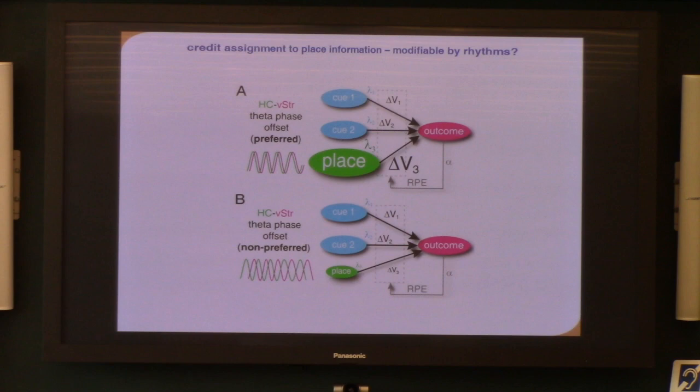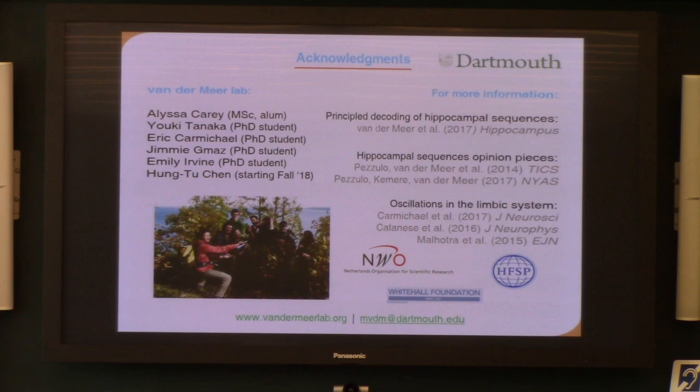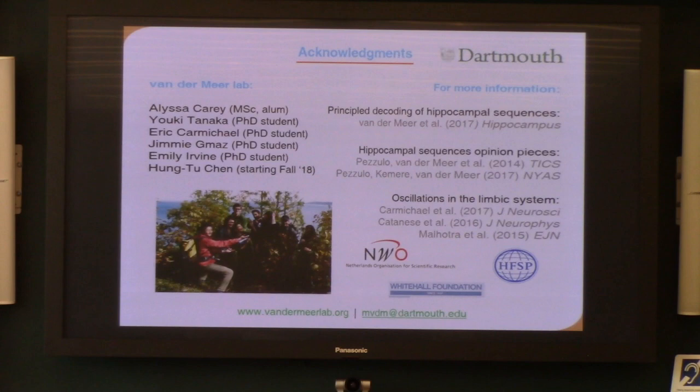So in my lab, we currently have sort of these two different areas of looking at the detailed information processing in the hippocampus and trying to put that in the context of these larger limbic networks. So decoding replays, but then putting them in a context of oscillations and how these information steps are coordinated across different areas. So if you're interested in that, come talk to me, talk about some hackathon projects. And yeah, I'm happy to chat about all of these ideas. Thanks.